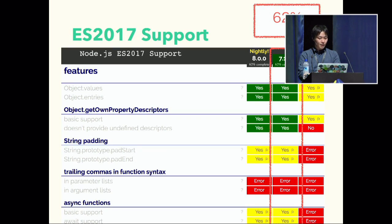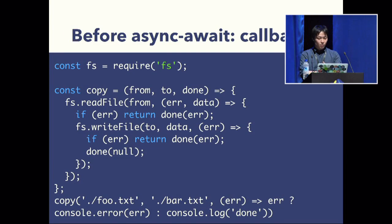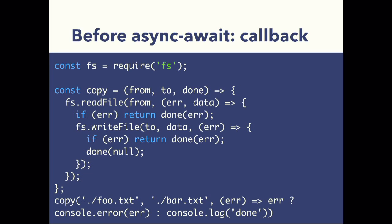In the case of ES 2017, we achieve 62% support. We can use async/await, but it's behind a flag: --harmony-async-await. I'll show you a demo. This code is the classic callback style — I think you write this style. When you execute this code, you can copy the data.